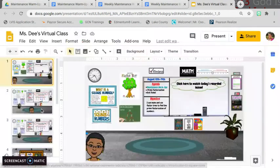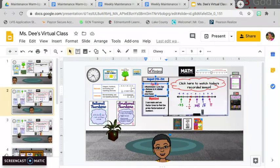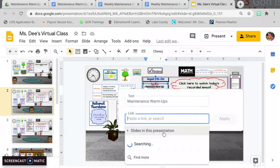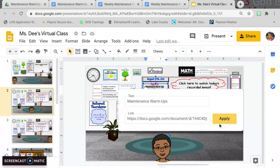Get out of present mode. Here's the next week, which is August 17th through 21st. I'm going to click on the maintenance warm-up and highlight it. Right-click, hit link, and I am going to paste and apply.